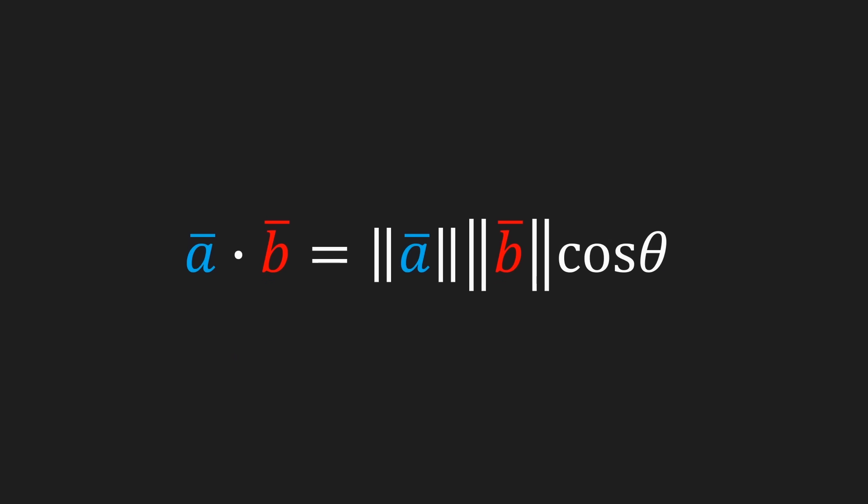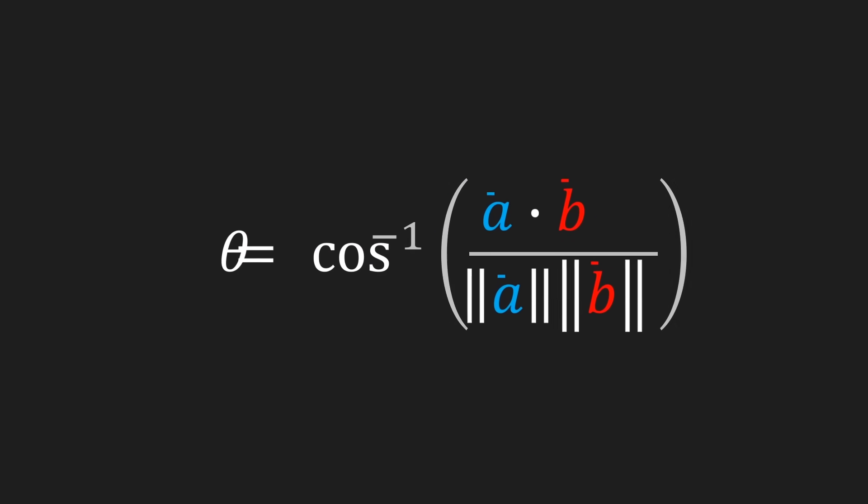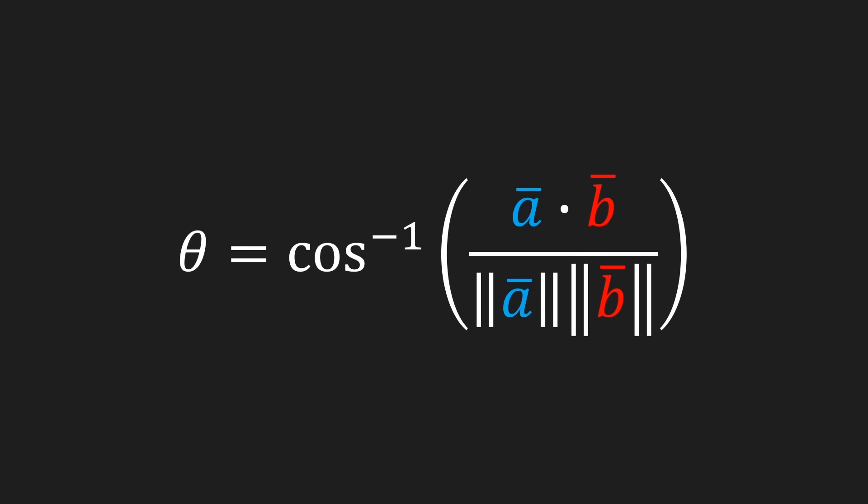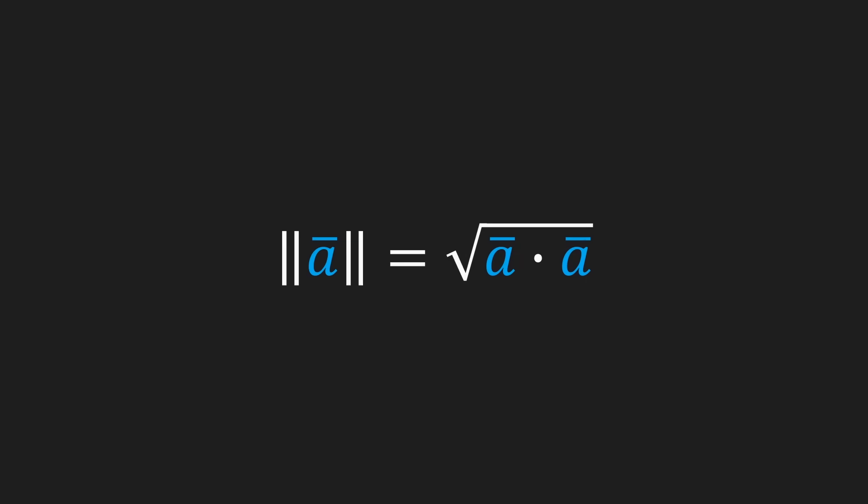I'm quickly going to come back to the original formula for our dot product, because if we reformulate that a bit then we can write an expression to calculate theta, which was of course the angle between vector a and b. There's one last thing about the dot product I wanted to show you, which is that the length of a vector is actually equal to the square root of the dot product of a vector with itself. I'll leave that up to you to figure out why that is.